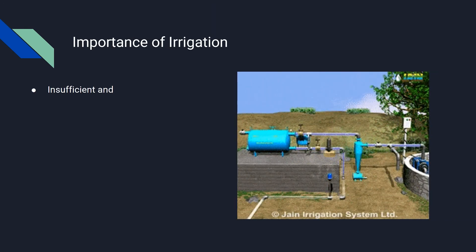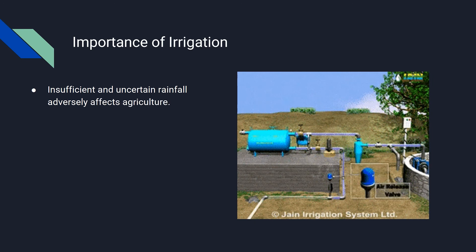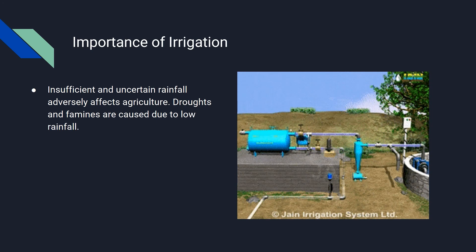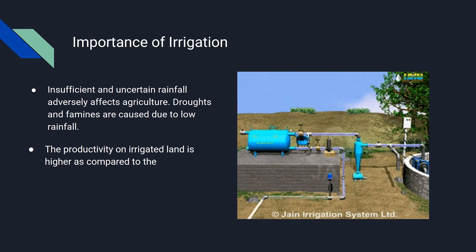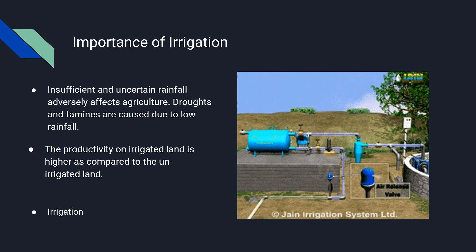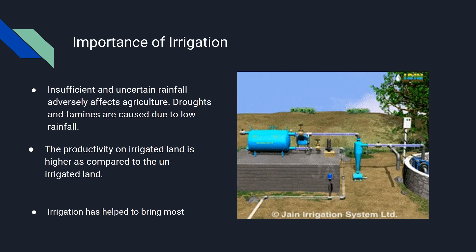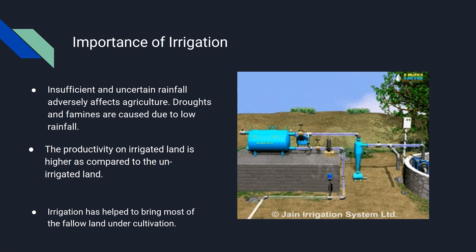Importance of Irrigation: Insufficient and uncertain rainfall adversely affects agriculture. Droughts and famines are caused due to low rainfall. The productivity of irrigated land is higher as compared to unirrigated land. Irrigation has helped to bring most of the fallow land under cultivation. Thank you.